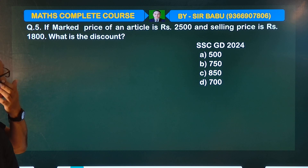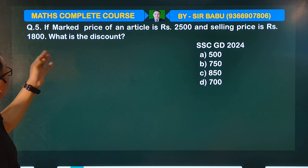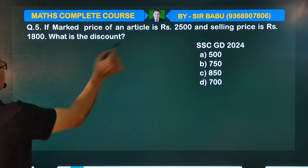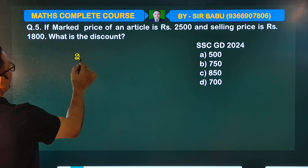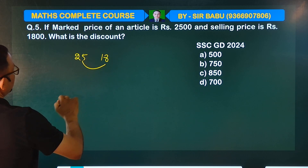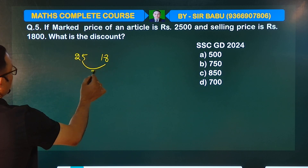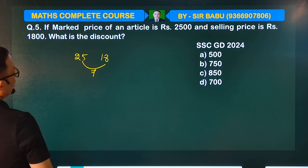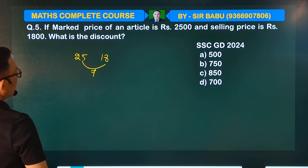If the mark price of an article is rupees and the selling price is given for this problem, we have a ratio of the mark price. What is the price of the mark price?